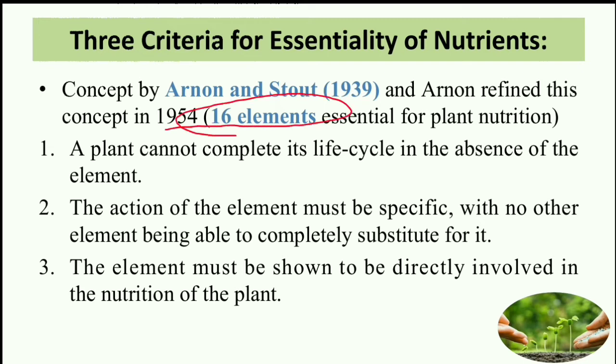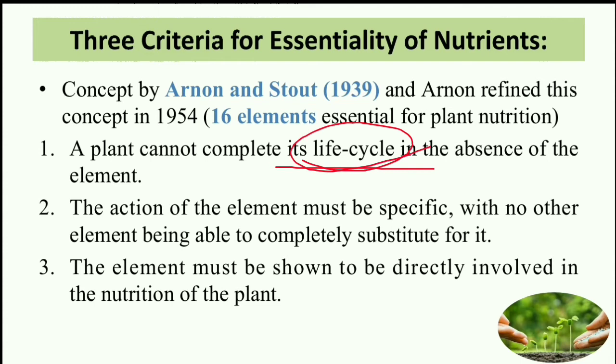At the time of Arnon and Stout, the total number of plant nutrients recognized was 16, but today the total is 17 elements, and the 17th one is nickel. Now, the first criterion is that a plant cannot complete its life cycle in the absence of an element. This means plants must complete their vegetative and reproductive stages, and without the nutrient, they cannot do so.